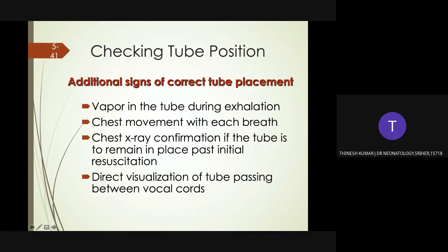Additional signs of correct tube placement include vapor in the tube during exhalation, chest movement with each breath given by positive pressure ventilation, and confirmation by chest X-ray if the tube remains in place beyond initial resuscitation. Direct visualization of the tube passing between the vocal cords is the best way to confirm the position of the ET tube.